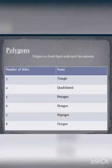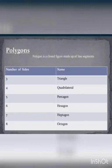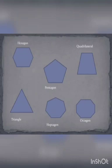A polygon is a simple closed figure with three or more line segments. If a polygon has three sides, it is called a triangle; four sides, a quadrilateral; five sides, a pentagon; six sides, a hexagon; seven sides, a heptagon; eight sides, an octagon; nine sides, a nonagon; ten sides, a decagon. We can see examples of polygons like hexagon, pentagon, quadrilateral, triangle, heptagon, and octagon.